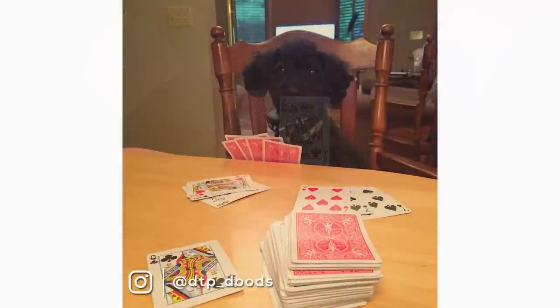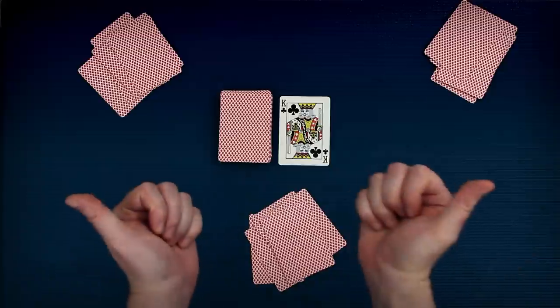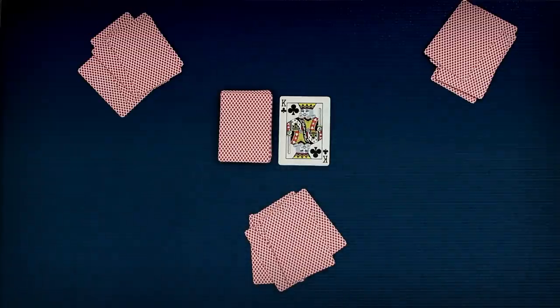Players take turns in a clockwise rotation and to the left of the dealer will go first. But that's it. You did it. You're all set up to play Rummy 500.